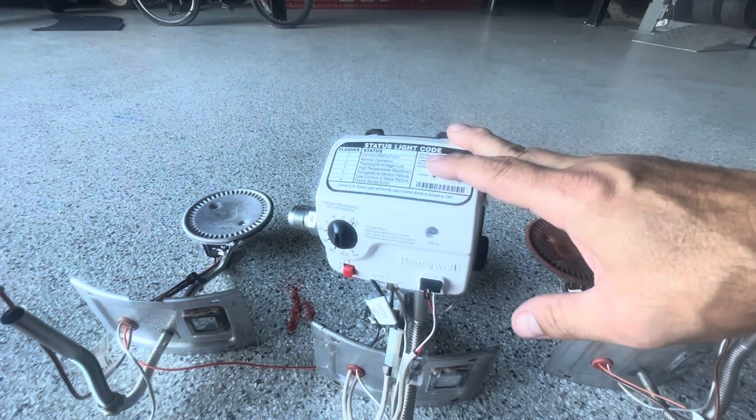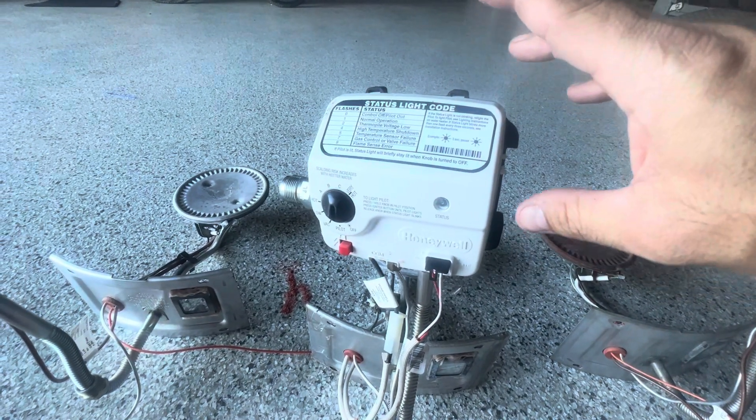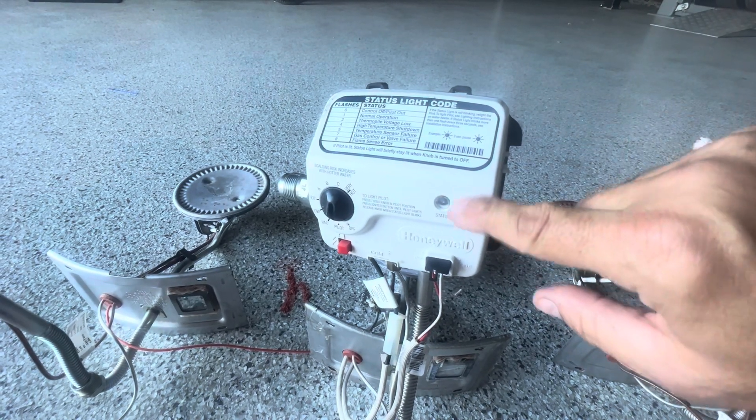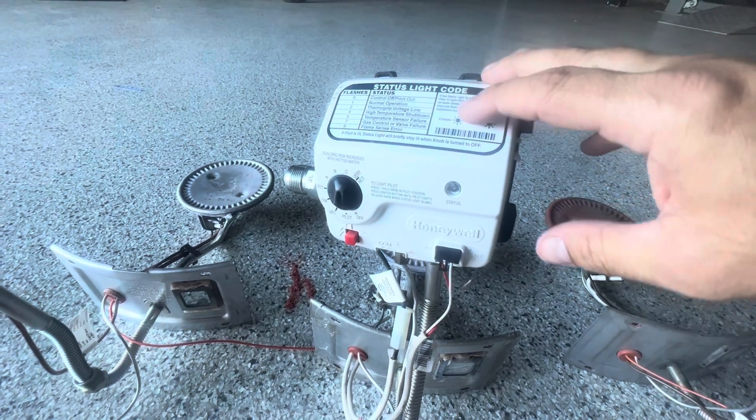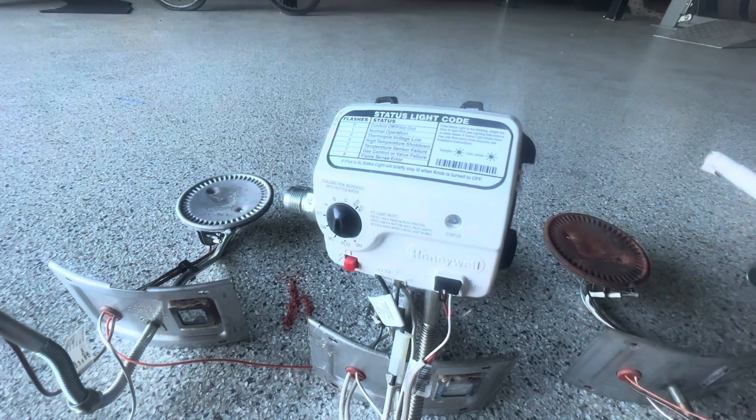The electronic gas valve works a little bit differently. It's got a thermal pile. It's 400 or 500 millivolts, powers this control board in here and this little light. Once it loses its signal, this will shut down also and the light will stop blinking.